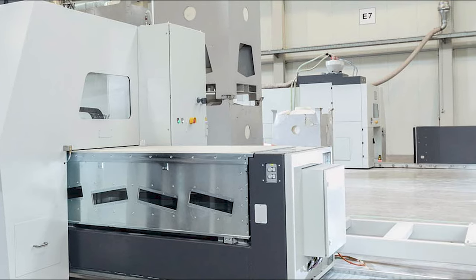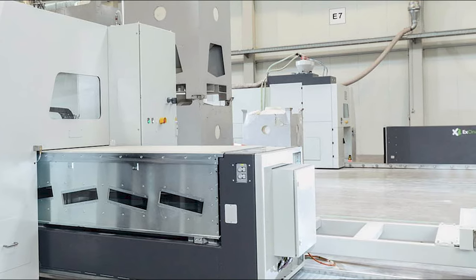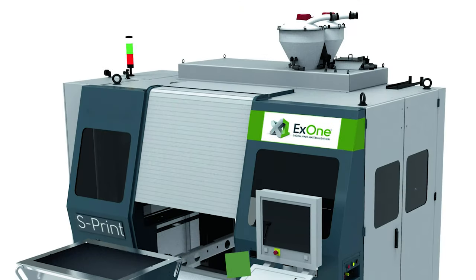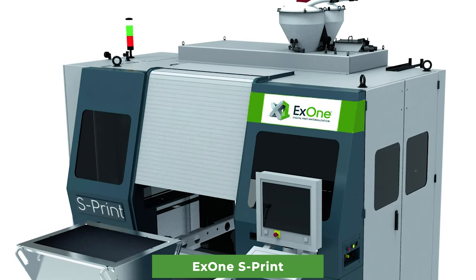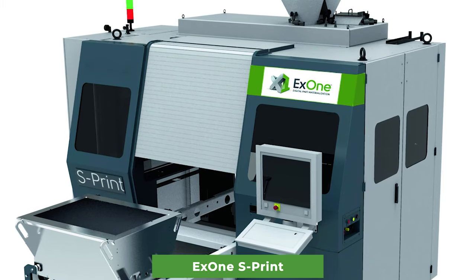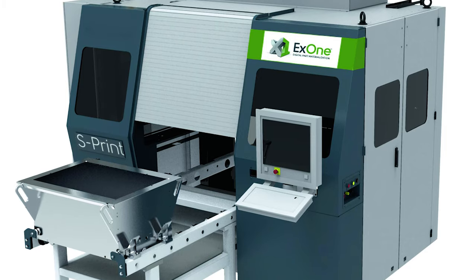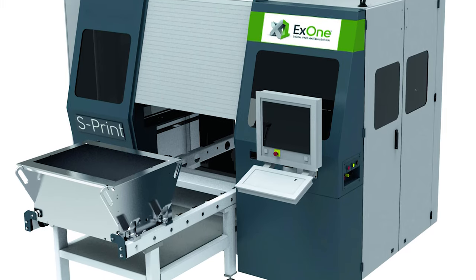The ExOne S-Print 3D printer has a print chamber of 800 by 500 by 400 millimeters. This unit prints molds with a layer thickness of 240 microns.